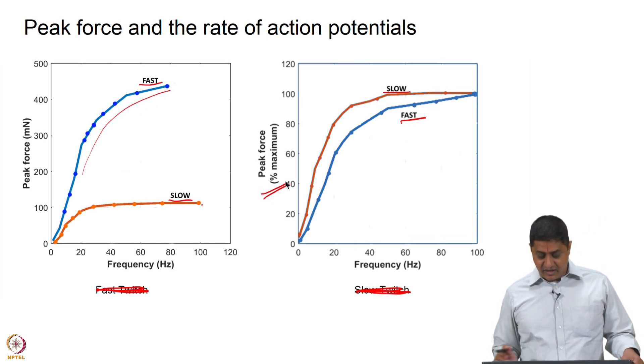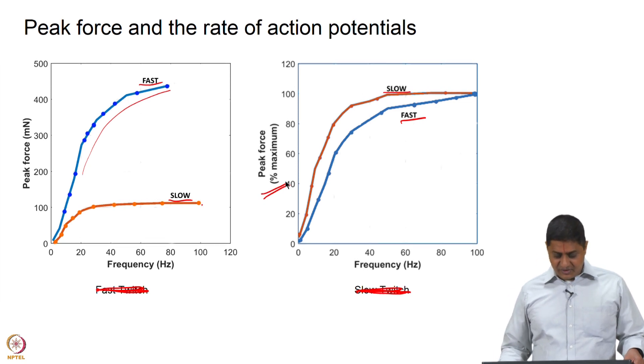Here in this case, this is a percentage maximum comparison of that. Then you realize that the nature is approximately similar with the slow twitch fibers on top of the fast twitch fibers.